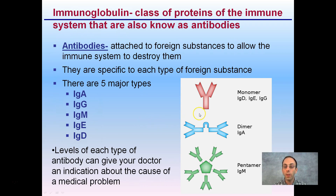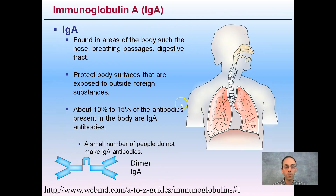Within our classifications, we have monomers, dimers — referring to two — and pentamers — referring to five. Only IgM antibodies are pentamers. IgAs are dimers, and IgD, IgE, and IgG are monomer antibodies.